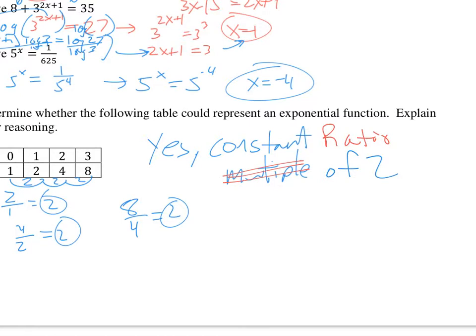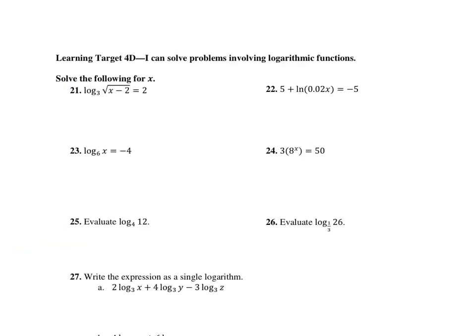Next we're going to go on to logarithmic equations. To solve these, we want to change them into exponential form. Square root of X minus 2 equals 3 squared, so we have square root of X minus 2 equals 9. Now square both sides, add 2, and X equals 83.